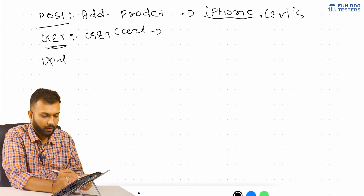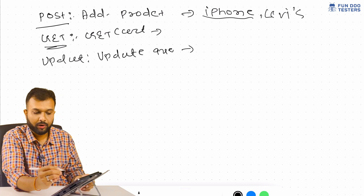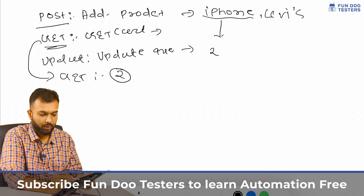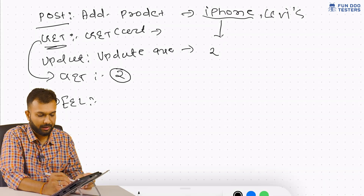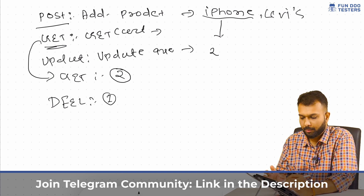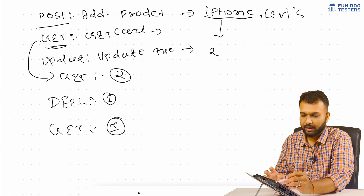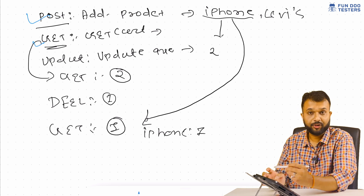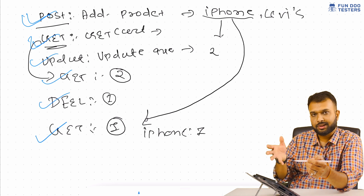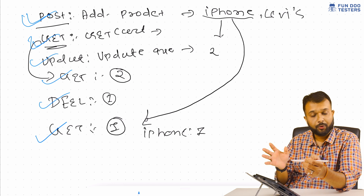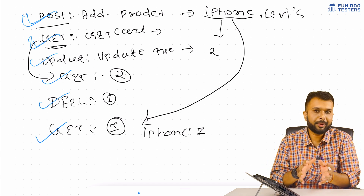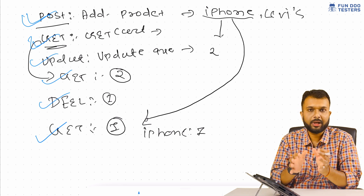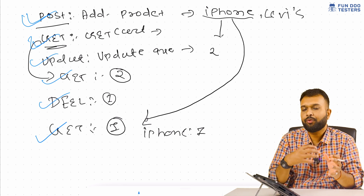If we want to update the quantity — say from one to two iPhones — we make an update API call. Then we make another GET call to confirm the quantity is now two. If we then want to delete one, we make a DELETE request, and follow up with a GET call to confirm the quantity is back to one. So the sequential flow is: POST → GET → PUT → GET → DELETE → GET, verifying data at each step.